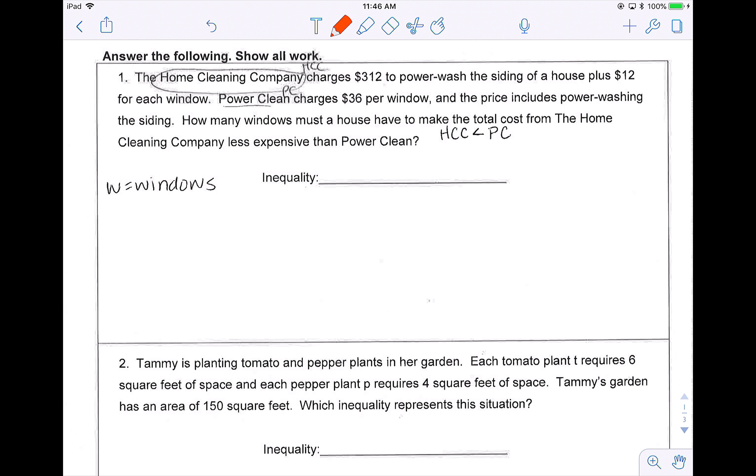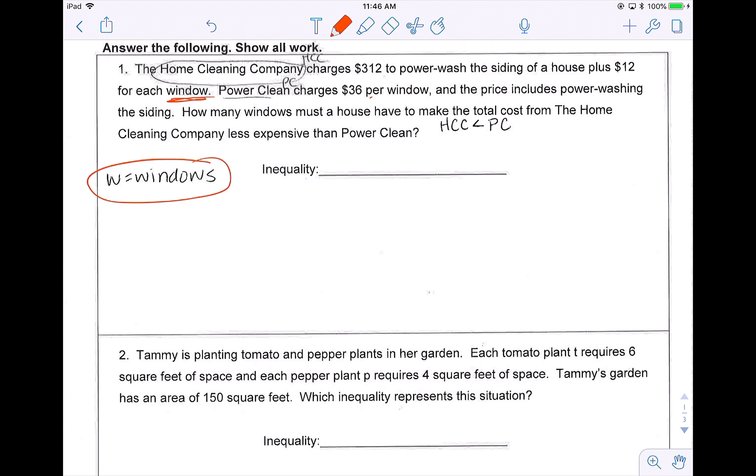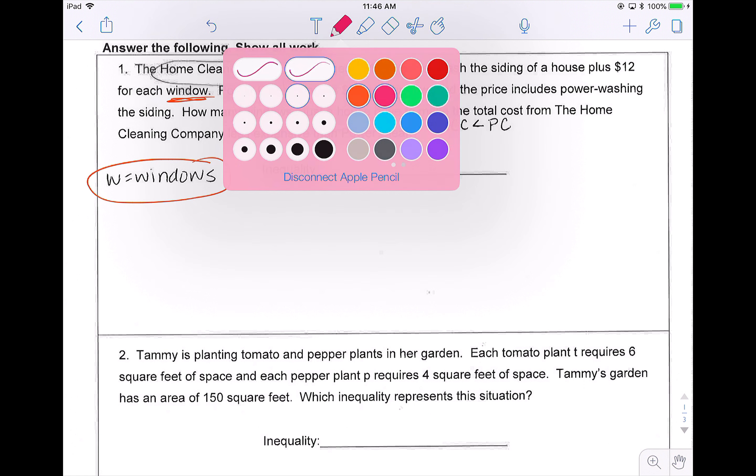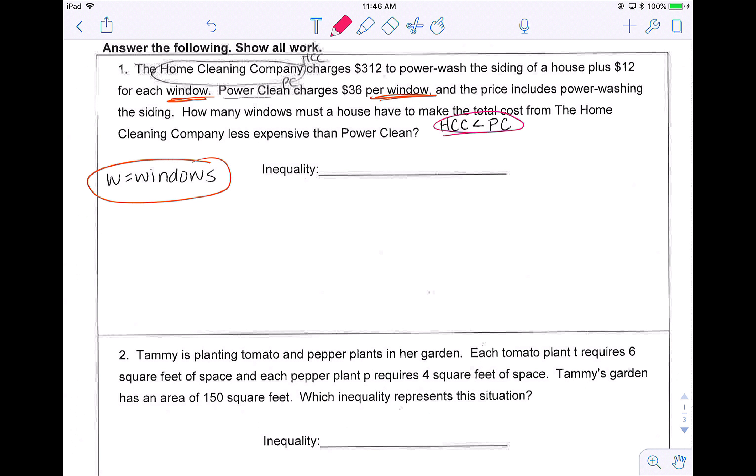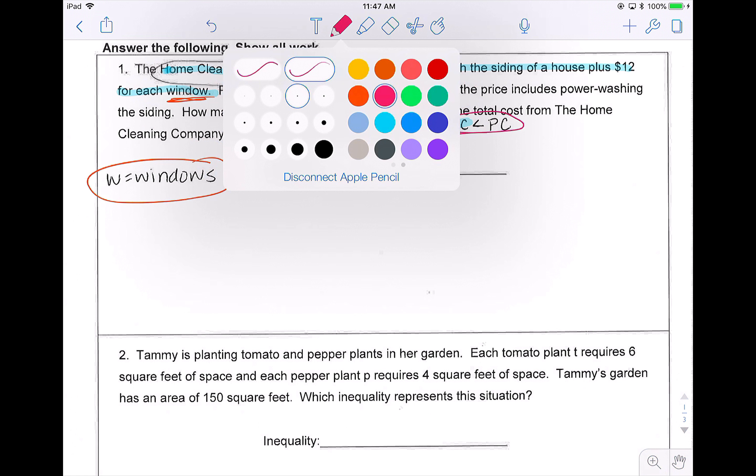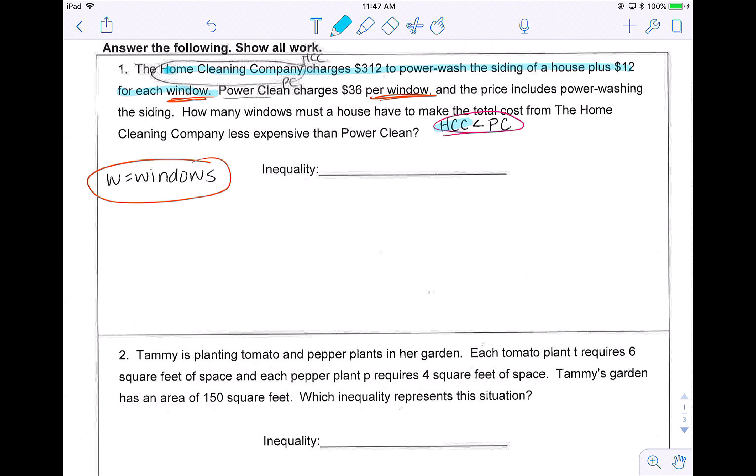We've been given a couple of helpful hints. First they tell us that W is going to represent windows. They also give us the inequality that I'm going to need. So if I look for HCC, the home cleaning company, I know that company charges $312 to power wash and $12 for each window. So $312 to power wash and $12 per window. We don't know how many windows, so I'm using W to represent windows.